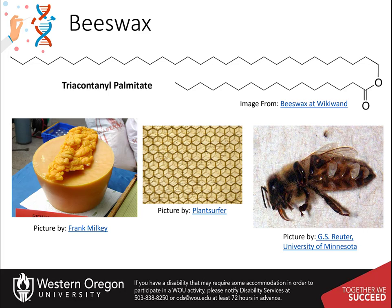Beeswax, Cera alba, is a natural wax produced by honeybees of the genus Apis. The wax is formed into scales by eight wax-producing glands in the abdominal segment of the worker bees, which discard it in or at the hive. The hive workers collect it and use it to form cells for honey storage and larval and pupal protection within the beehive.